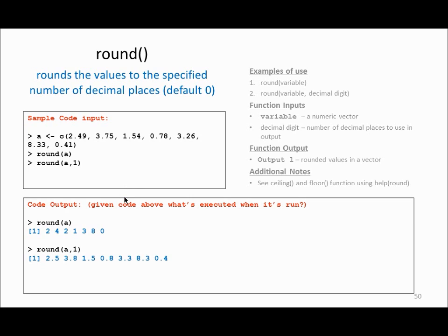There may be a case where you want one decimal point in your data. So you can call round(a, 1), which means it will give you one decimal number. It converts 2.49 to 2.5 because now it looks at the second decimal digit. If the second number is greater than or equal to five it rounds up — so 3.75 becomes 3.8. If the second number is less than five, for example 1.54 becomes 1.5. It rounds all your data to one decimal position.